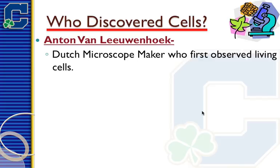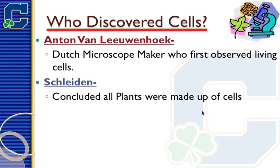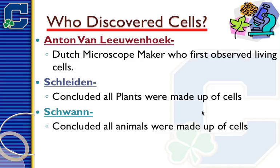There are other scientists credited with parts of discovering cells. Anton van Leeuwenhoek was a Dutch microscope maker who actually made one of the very first microscopes. He was observing pond water and saw little things swimming around inside it. We credit him with seeing living cells for the first time — he was the first one to do that. But we give credit for first seeing cells to Robert Hooke, even though Leeuwenhoek may have actually been first based on timeline. Schleiden, a botanist, concluded that all plants were made up of cells after looking at different leaves and plant materials.